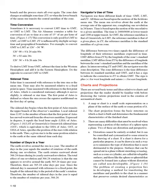Charts and Projections. There are several basic terms and ideas relative to charts and projections that the reader should be familiar with before discussing the various projections used in the creation of aeronautical charts. A map or chart is a small-scale representation on a plane of the surface of the earth or some portion of it. The chart projection forms the basic structure on which a chart is built and determines the fundamental characteristics of the finished chart. There are many difficulties in representing the surface of a sphere upon a plane, including distortion and perspective. Distortion cannot be entirely avoided, but it can be controlled and systematized. Surfaces that can be spread out in a plane without stretching or tearing are called developable surfaces, and those that cannot are called non-developable.